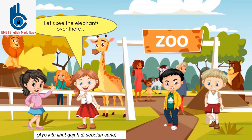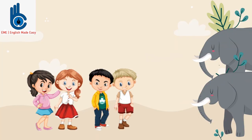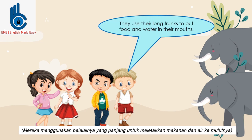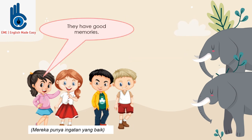Let's see the elephants over there. Elephants eat grass and plants. They use their long trunks to put food and water in their mouths. They have good memories.